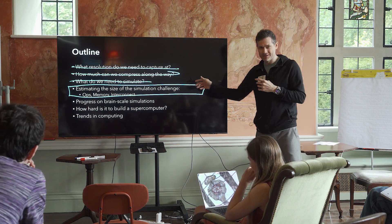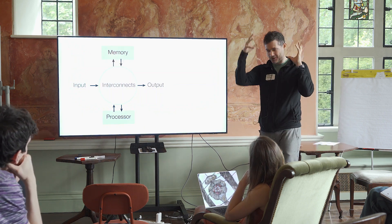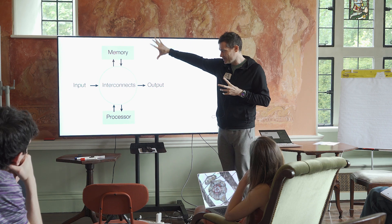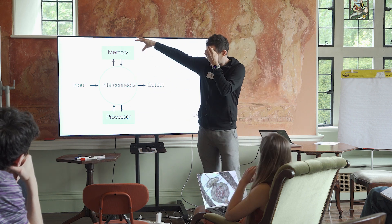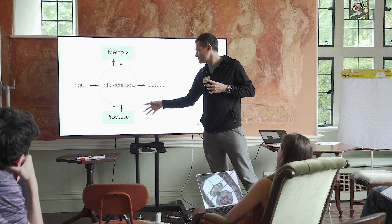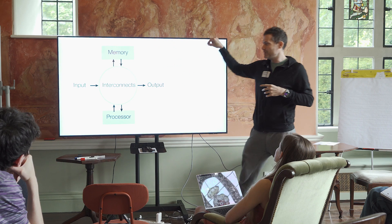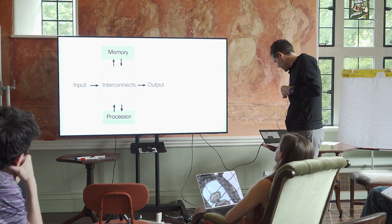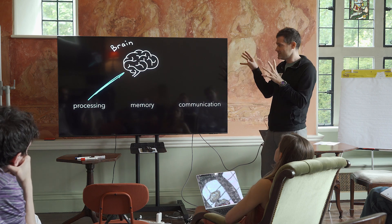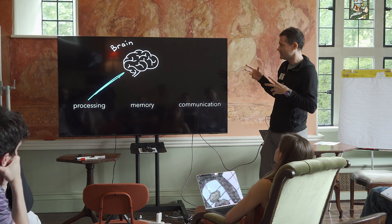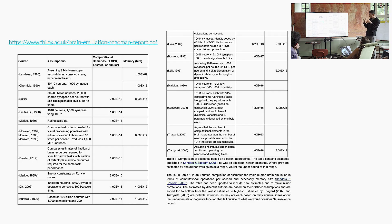Let's try to estimate the size of the simulation challenge. Every computer — including our brains — can be broken into three main parts: memory, interconnects, and processor. Memory to store information, processor to manipulate symbols, interconnect to move data and bits between different parts. Let's look at the brain from these perspectives and see how close we are to being able to simulate it. So let's estimate processing.